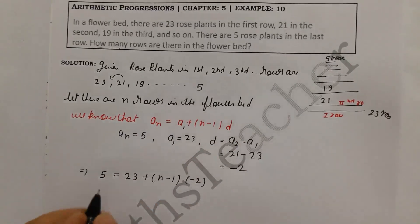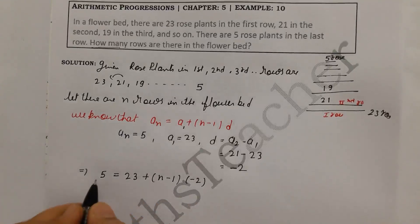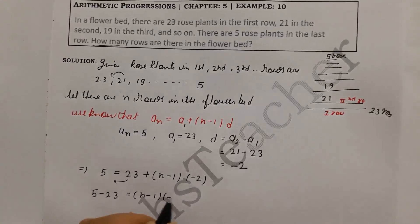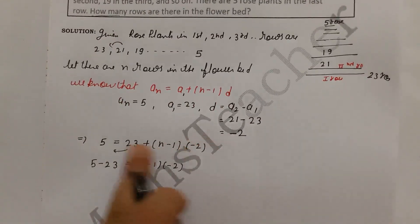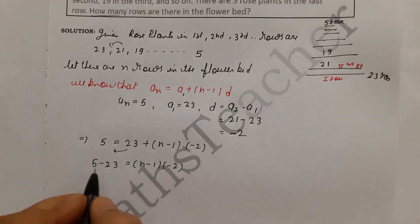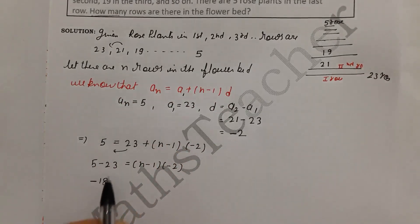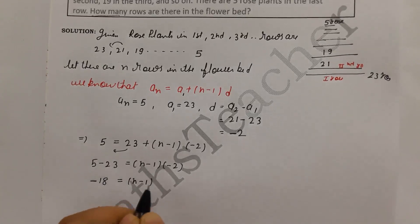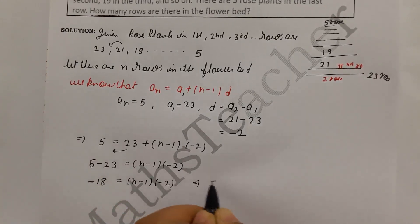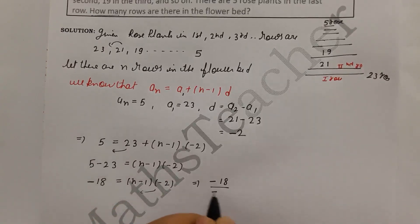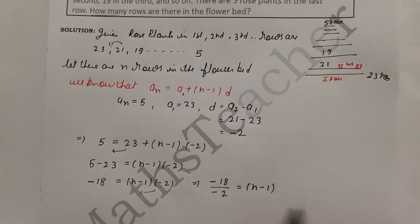Solving the equation: 5 - 23 = (n-1)(-2), which gives us -18 = (n-1)(-2). Dividing both sides by -2: -18 divided by -2 = n - 1, so 9 = n - 1.